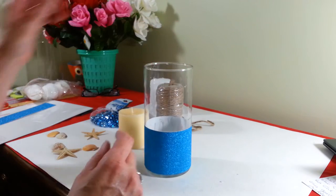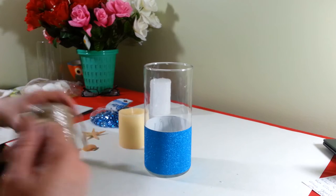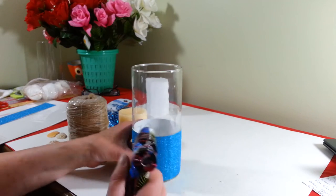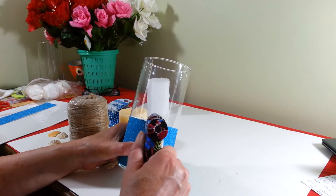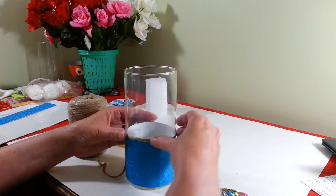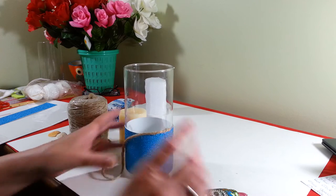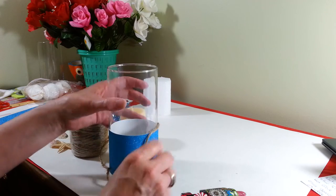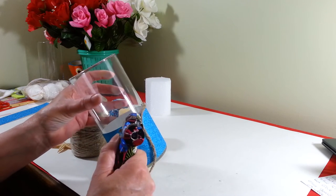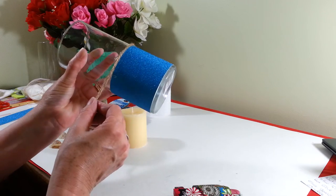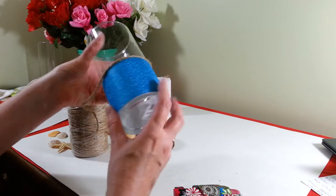Alright, I think that looks pretty good. So now we're going to take our jute string and start in the back, just right on this line, and start gluing this on. And we're just going to keep going around.